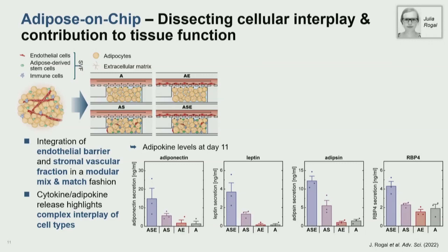For example, looking at adipokine levels — which are typically thought to be produced only by adipocytes — if you have an adipocyte-only system, you see some secretion but not much. Only in the full-complexity system, where you have immune cells, stromal cells, and endothelial cells, do you get a physiological level of secretion. This really shows the interplay of immune cells with adipocytes, stromal cells, and endothelial cells that makes up the tissue function.